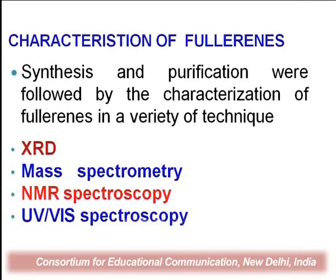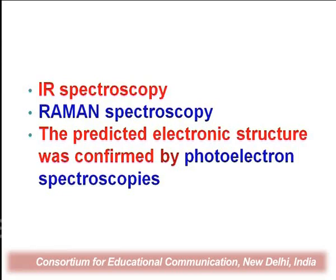Characteristics of fullerenes — how we characterize fullerene molecules. After synthesis and purification, we characterize the fullerenes to determine their applications in different fields. The methods for characterization of fullerenes are: XRD, mass spectrometry, NMR (nuclear magnetic resonance) spectroscopy, UV-visible spectroscopy (also called ultraviolet-visible or electronic spectroscopy), IR (infrared) spectroscopy, and Raman spectroscopy. The predicted electronic structure was confirmed by photoelectron spectroscopy, which can identify the type, size, and structure of the synthesized fullerenes.